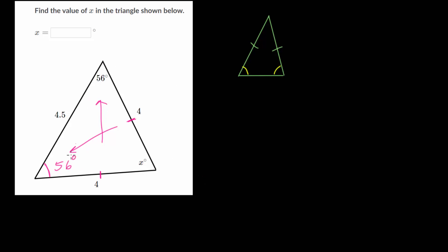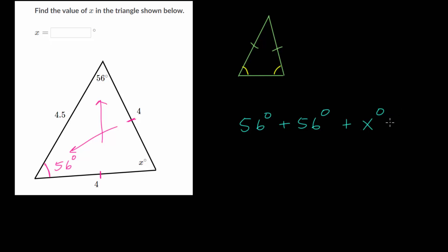Now that we know two of the angles, we can use the fact that the angles in a triangle add up to 180 degrees to figure out this missing angle. So let's set up that equation — the 56-degree angle plus the other 56-degree angle plus our missing angle x degrees is equal to 180 degrees. Let's combine like terms: 56 plus 56 is 112 degrees, so 112 degrees plus x degrees equals 180.